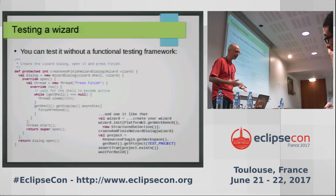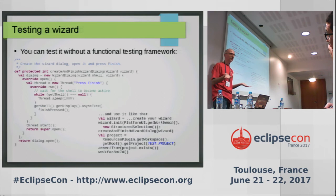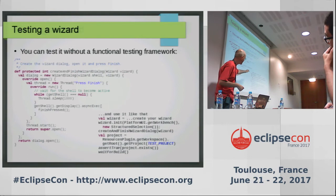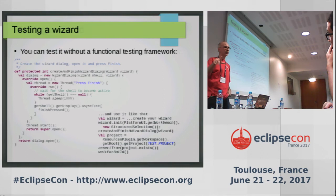You can even test a wizard without using a functional testing framework. It's a little more complicated, but once you know how to do it, it's easy. There is a reusable method that you can simply pass your wizard to, and it will do all the things for you. For instance, you can pass your wizard and check that it creates the project in the workspace with the expected structure, wait for the build, and check there are no errors.